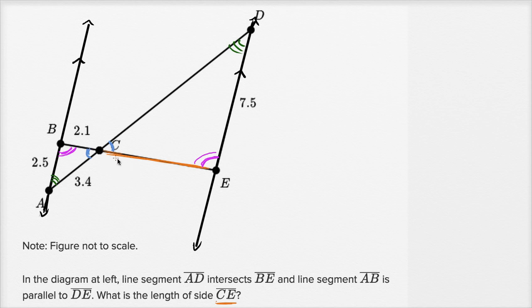So, for example, the ratio of side CE, so we could say the ratio of CE, the length of segment CE, to this side right over here, so side segment ED, which has length 7.5, is going to be equal to the ratio of the corresponding side to CE.